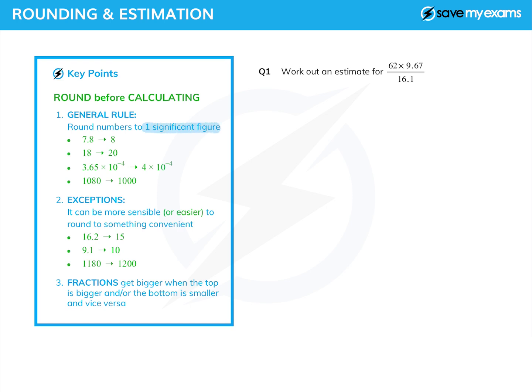So 7.8 would become 8, 18 might become 20, and then one in standard form here, 3.65 becomes 4 and the standard form bit stays the same, and 1080 might become a thousand.